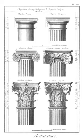Formeret: French term for the wall rib carrying the web or filling in of a vault.